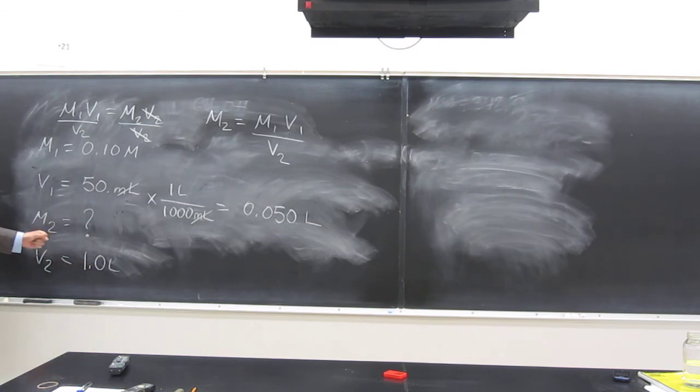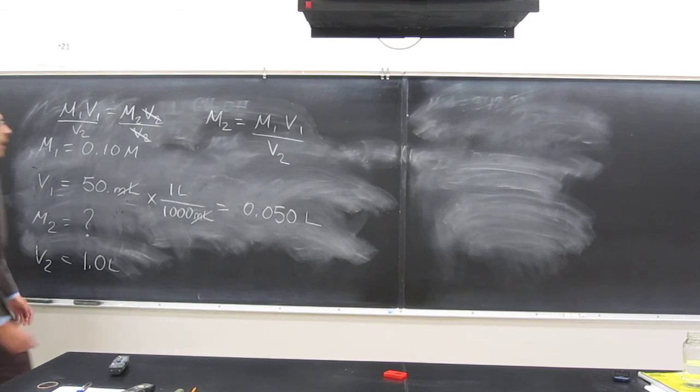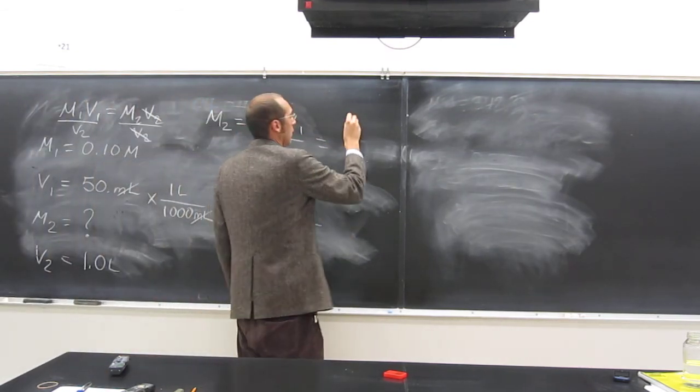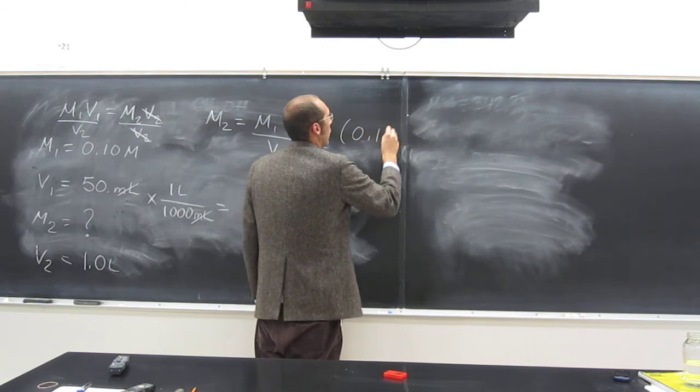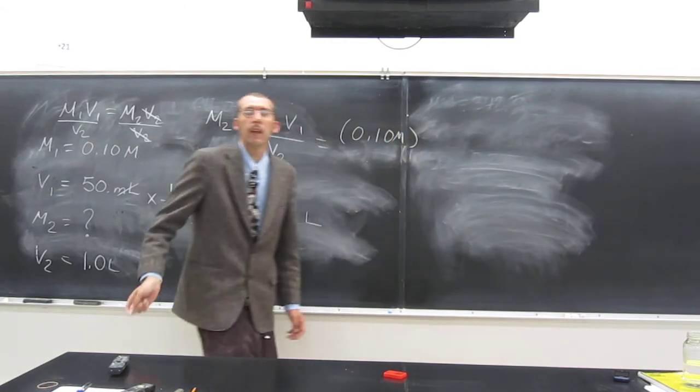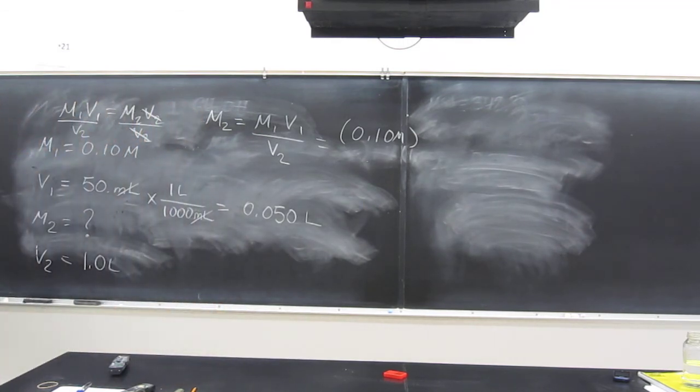What are the units of concentration going to be in the end? Molarity, right? Okay, so let's make sure. What's M1? 0.10 molar. Molar is how we say that, okay?